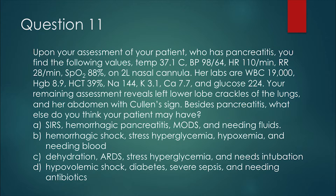Her labs are WBCs 19,000, hemoglobin at 8.9, hematocrit 39%, sodium level 144, potassium 3.1, and a calcium level of 7.7, while her glucose is 224. Your remaining assessment reveals lower left lobe crackles of the lungs and her abdomen with Cullen's sign presenting.